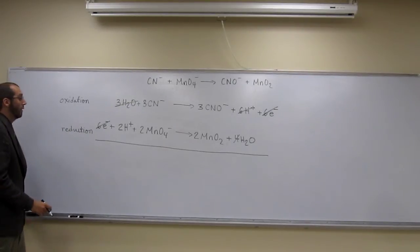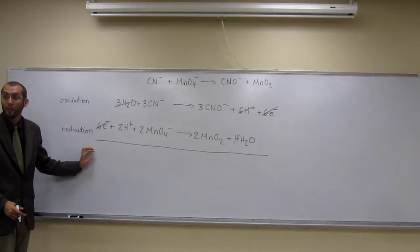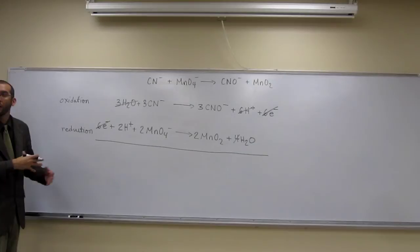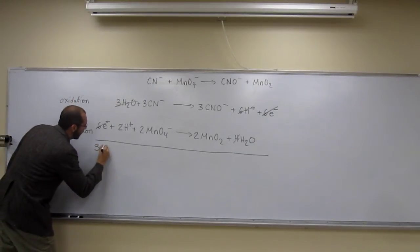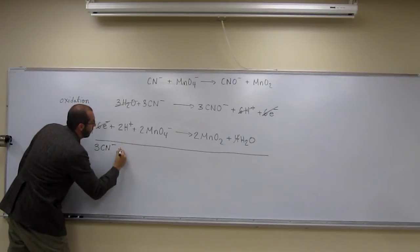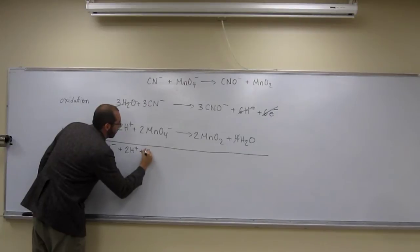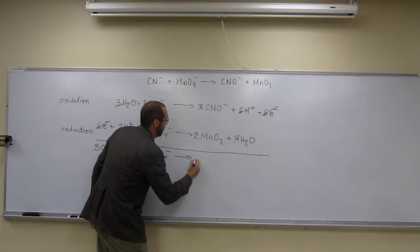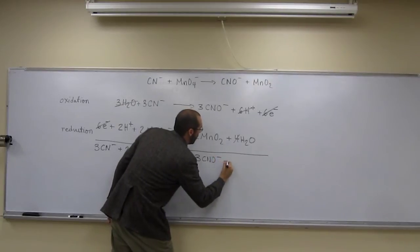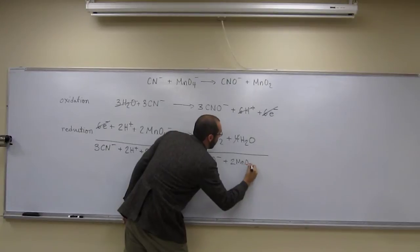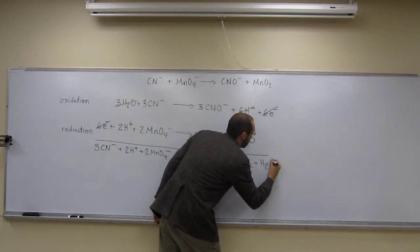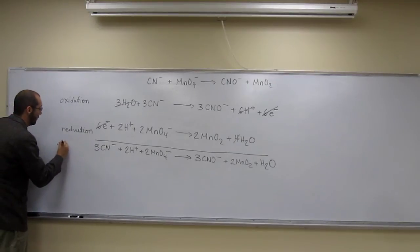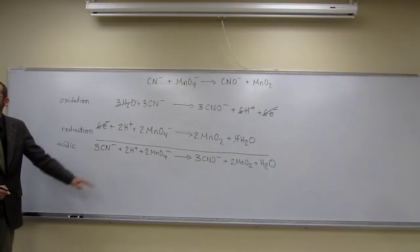What we add up here would be the balanced reaction in an acidic solution. So: 3CN⁻ plus 2H⁺ plus 2MnO₄⁻ goes to 3CNO⁻ plus 2MnO₂ plus H₂O. Notice here we have protons, so this is an acidic solution — this is the balanced equation in an acidic solution.